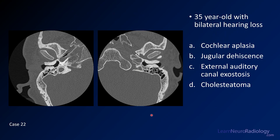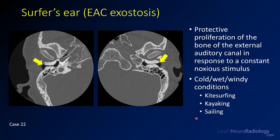Case number 22: a 35-year-old with bilateral hearing loss. We have two images from a temporal bone CT, one of each temporal bone. Choices are cochlear aplasia, jugular dehiscence, external auditory canal exostosis, or cholesteatoma. The answer is external auditory canal exostosis — also known as surfer's ear. Chronic cold water exposure irritates the bone of the external auditory canal, causing bilateral symmetric bone proliferation. This has a characteristic ant-mini appearance, so you just need to recognize it.